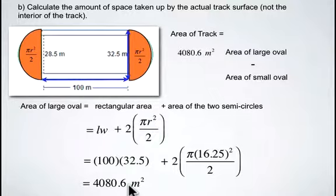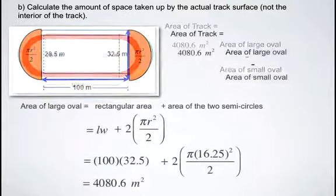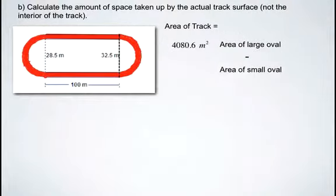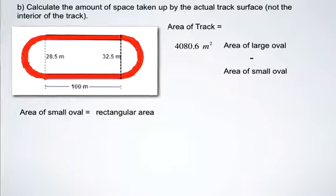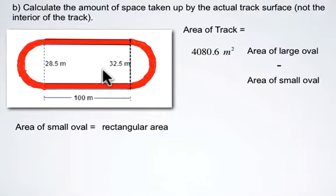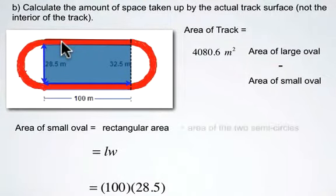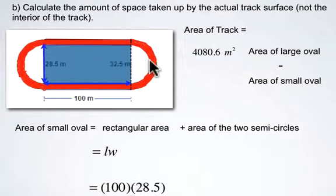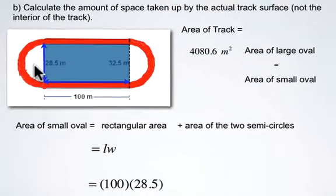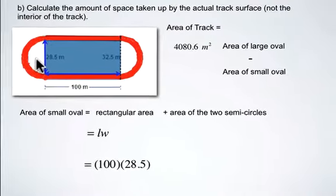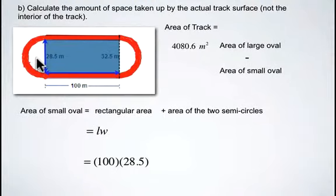Once you've worked out the calculation, you should come to a solution of 4080.6 square meters. So now we know what the area is of the large oval. All that remains to be found now is the area of the small oval. Well, to calculate that area, we also need to know the rectangular area. And we would also like to know what the area is of the two semicircles on the outside. So very similar to what we did to calculate the area of the large oval.